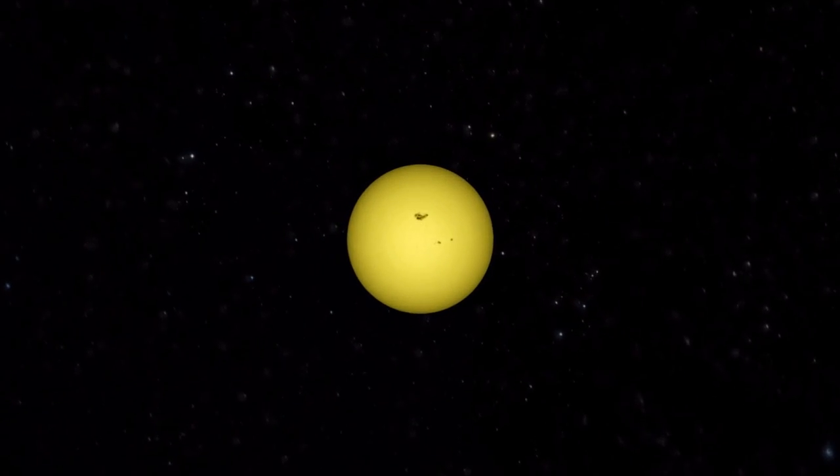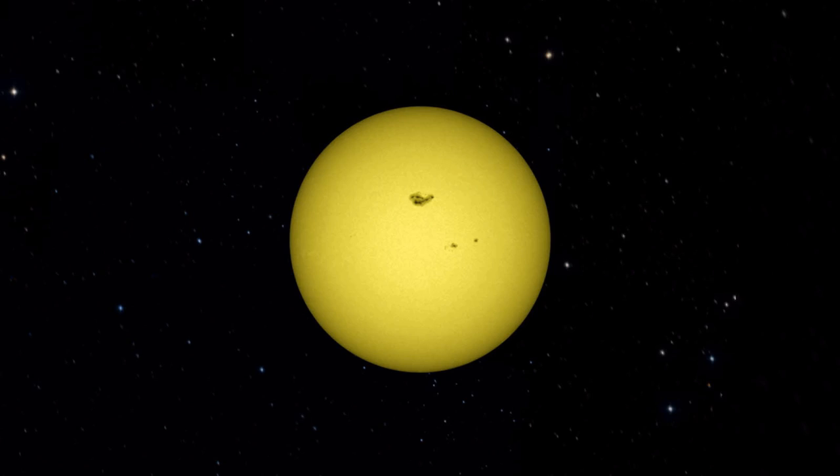It's the only star in the sky that looks like anything other than a dot to our eyes. The Sun is 93 million miles from Earth. That sounds far,